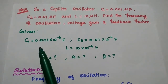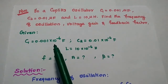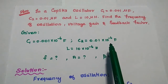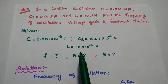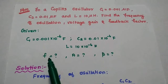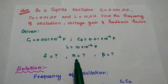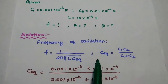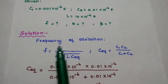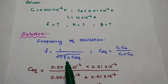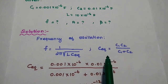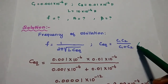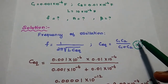The given data: C1 is equal to 0.001 × 10⁻⁶ farad, C2 is equal to 0.01 × 10⁻⁶ farad, and L is equal to 10 microhenry. We are going to find out the frequency of oscillation, voltage gain, and feedback factor. The frequency of oscillation formula is F = 1 / (2π √(L × C_equivalent)), where C_equivalent = C1·C2 / (C1 + C2). This is the formula for the Colpitts oscillator.